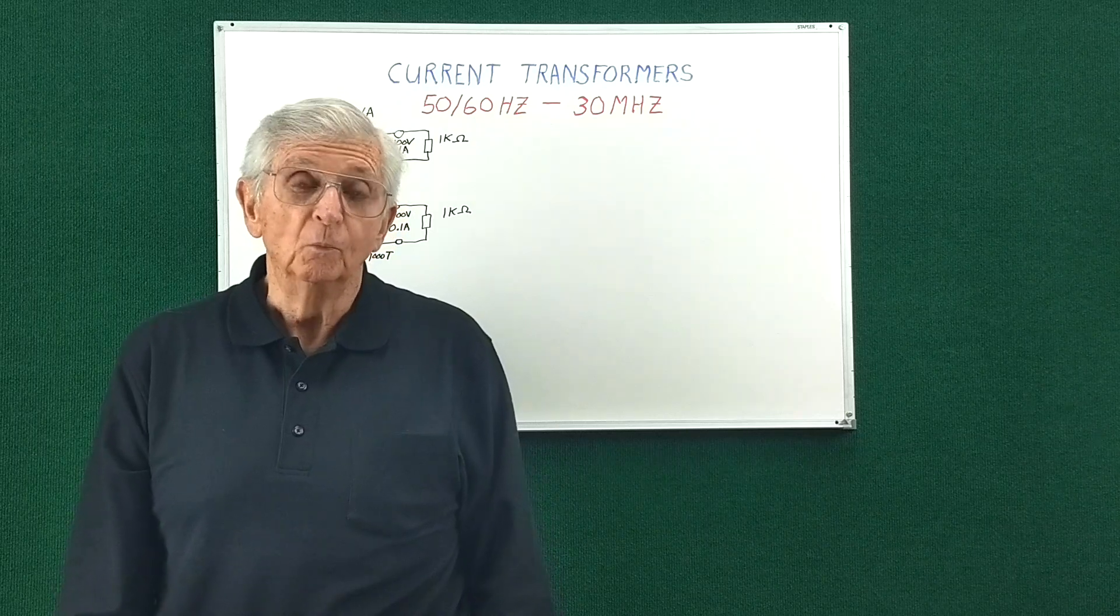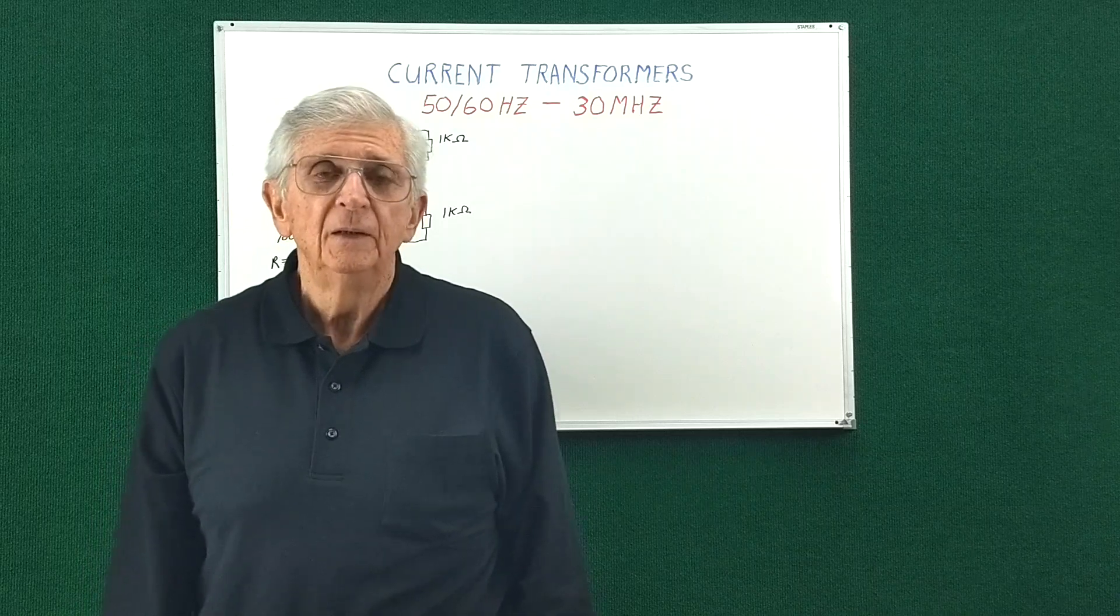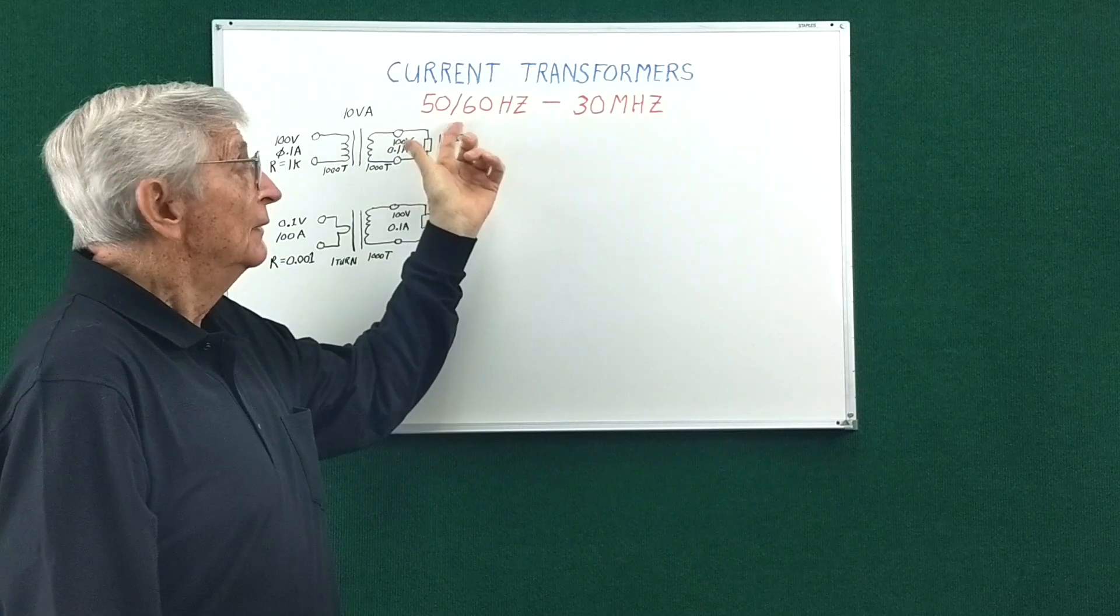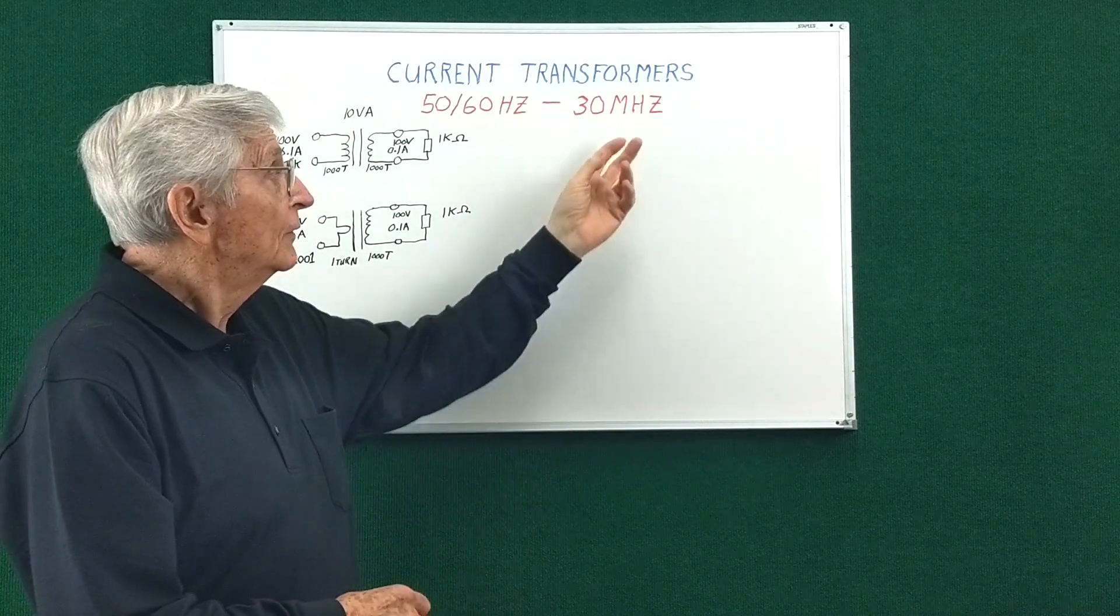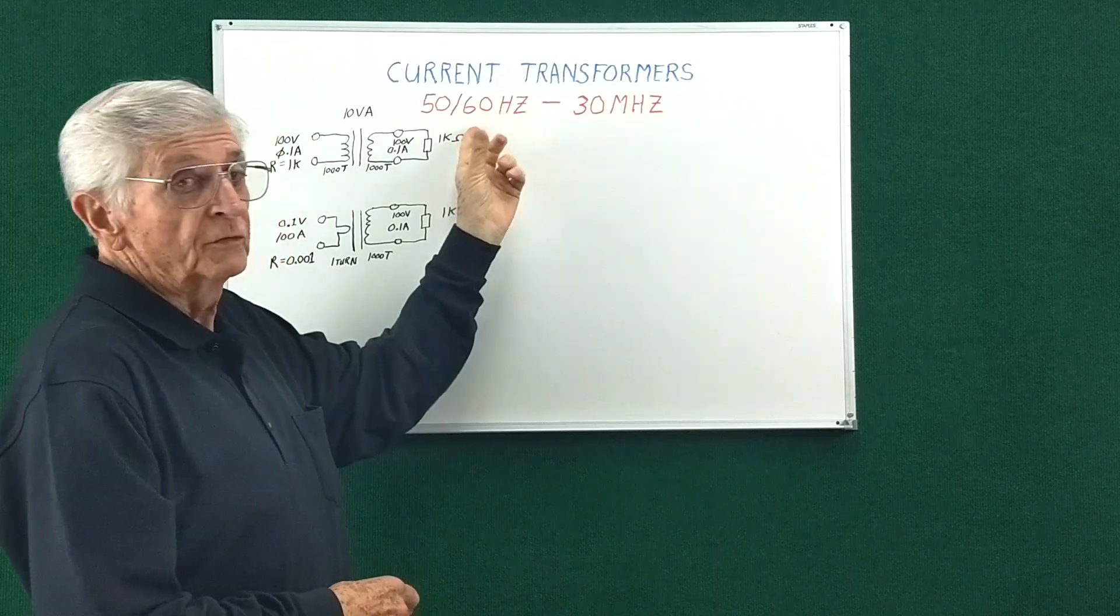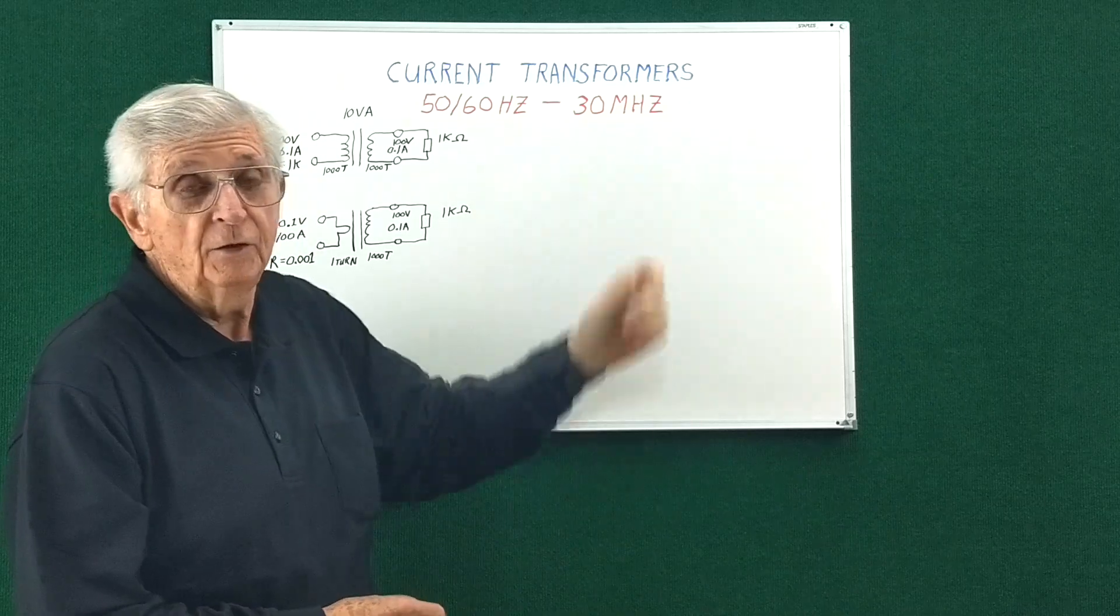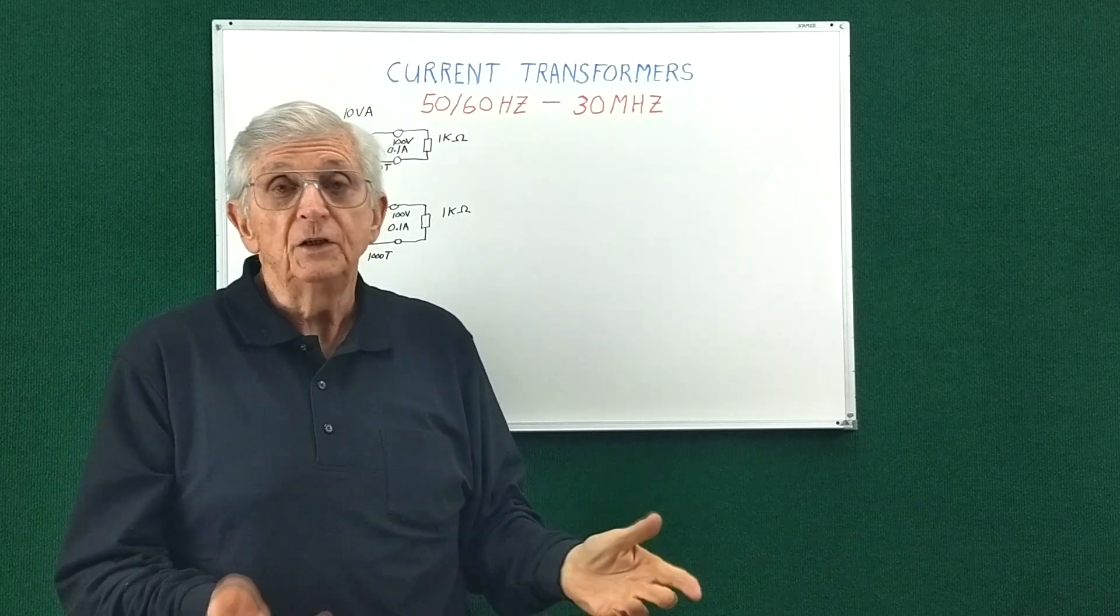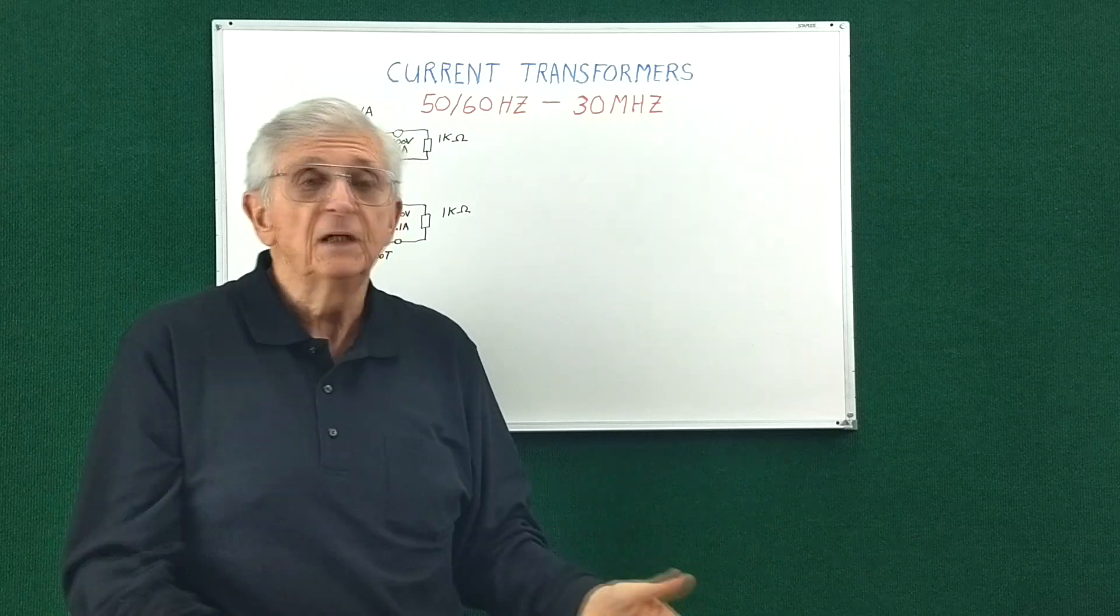Hi everyone, I'm Jim White and this video is about current transformers. Current transformers are used at 50-60 Hertz line frequency, and there's also RF current transformers. I'm going to show you how to make one for 50-60 Hertz and how to make one that will work up to 30 megahertz. The RF current transformer can be used to measure, for instance, the current around a magnetic loop antenna.